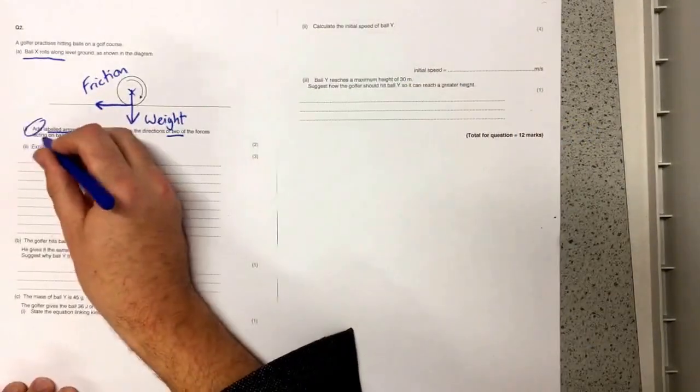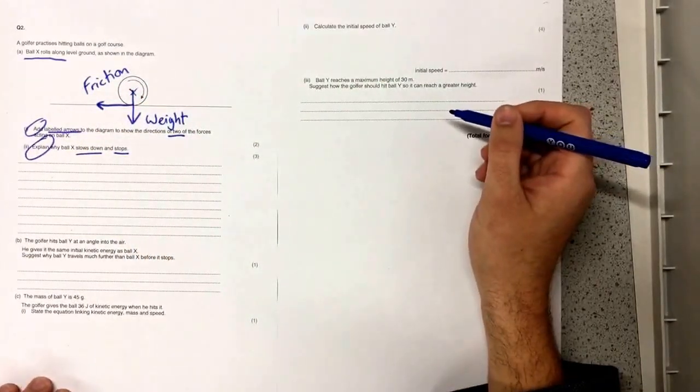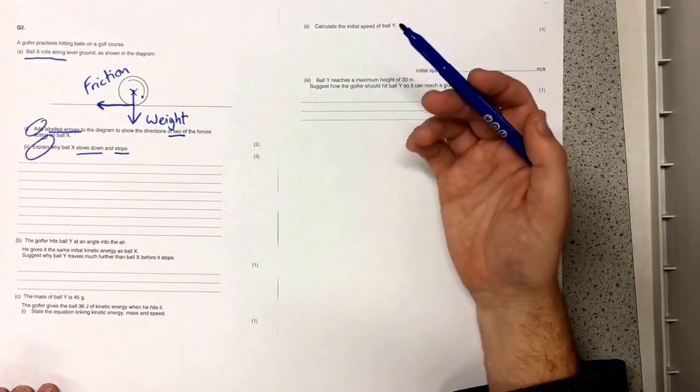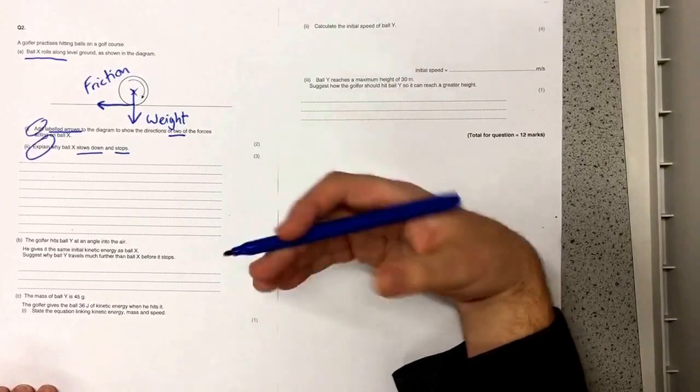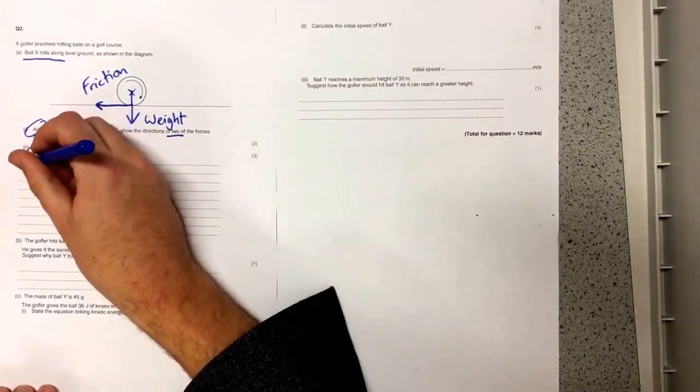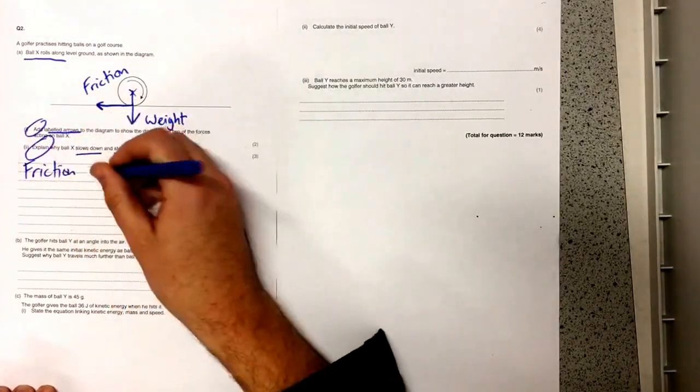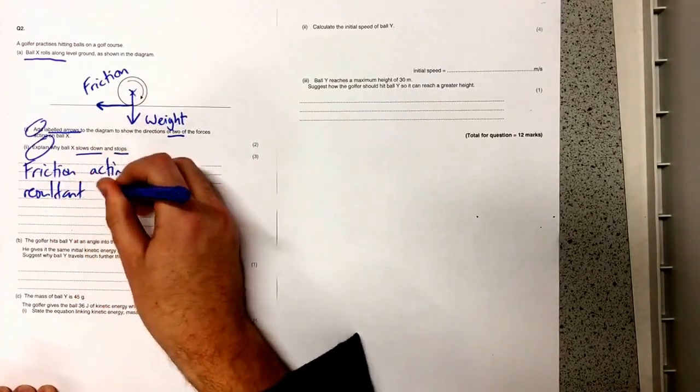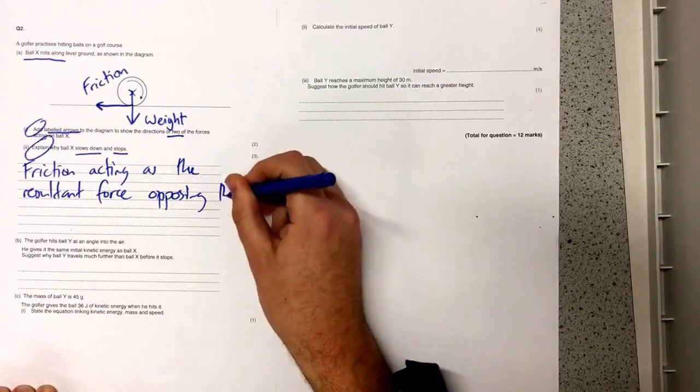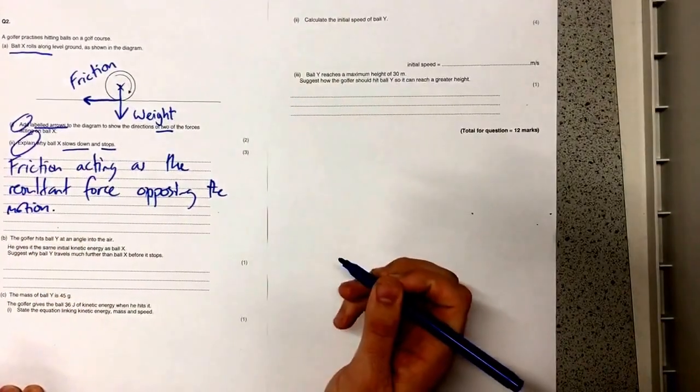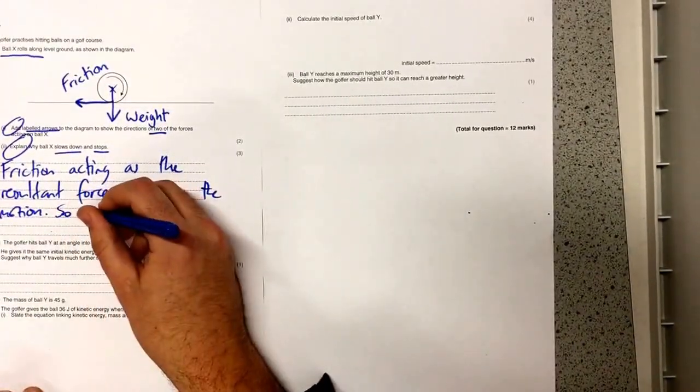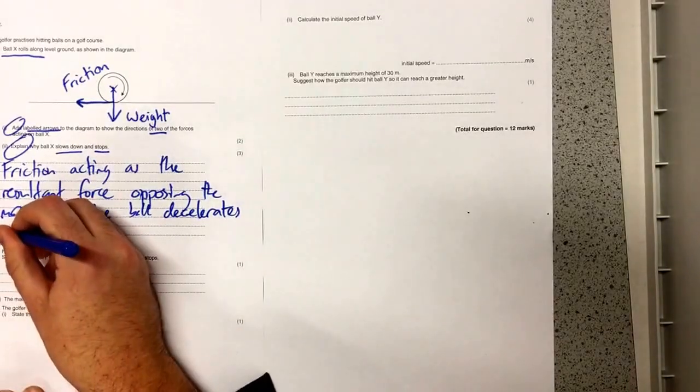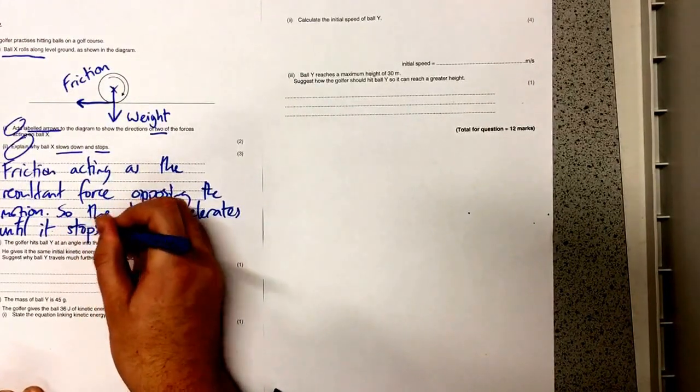The second question says to explain why this ball slows down and stops and so we've got to think about what force it is that's slowing it down or decelerating it. Now of course the force that we've labelled opposing the motion is friction and that is going to be what slows it down and ultimately stops it. So we've got friction acting as the resultant force opposing the motion. The ball decelerates until it stops.